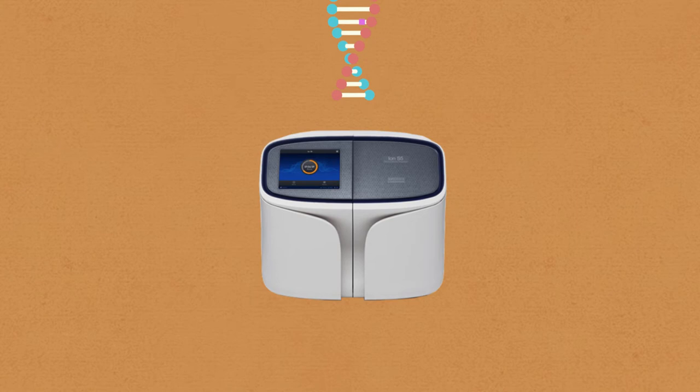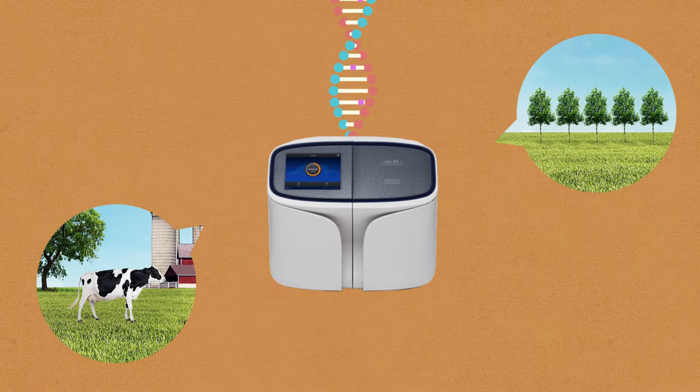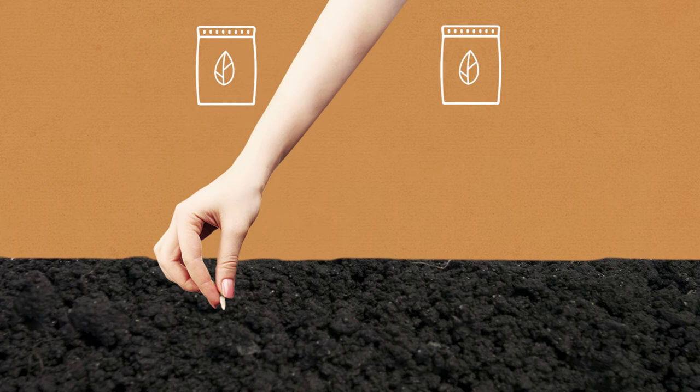Axiom Microarray and AgriSeq experiments tell scientists which DNA variations are most commonly present in the best animals or plants, so that these variations can be selected during genetic breeding.